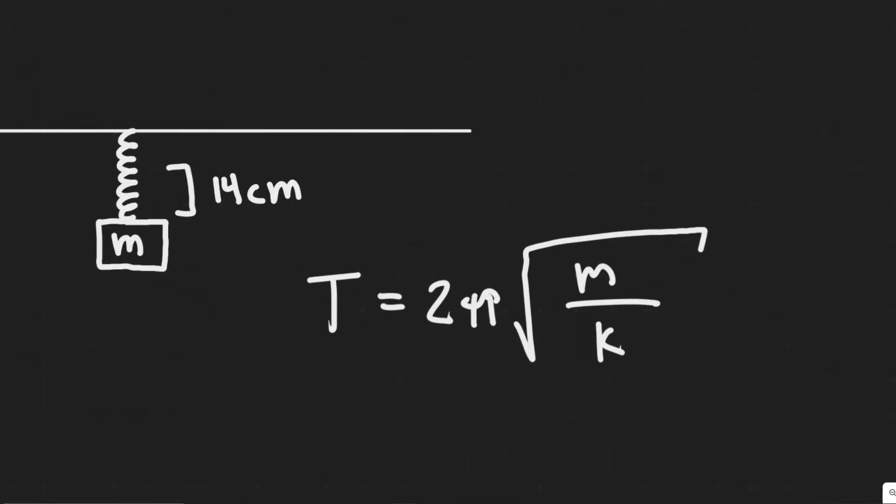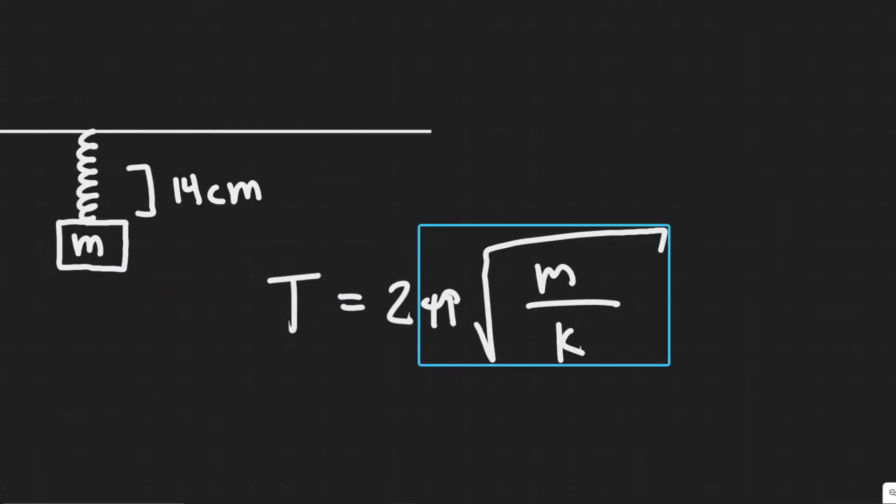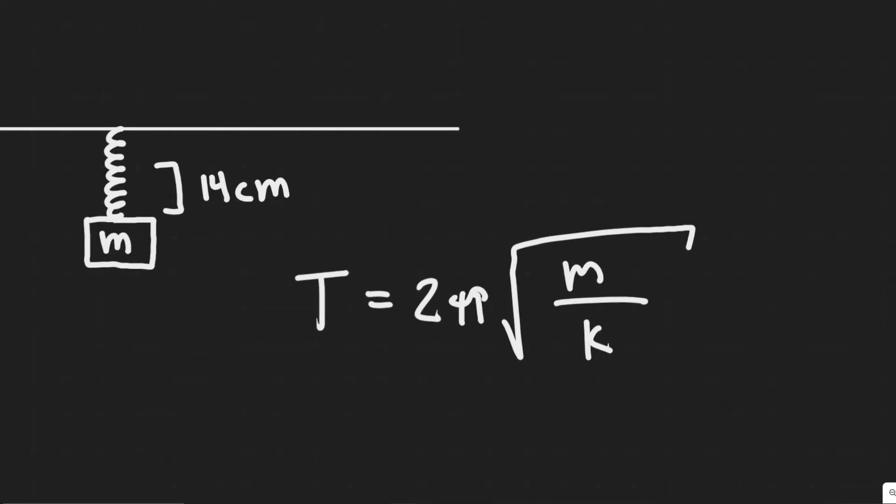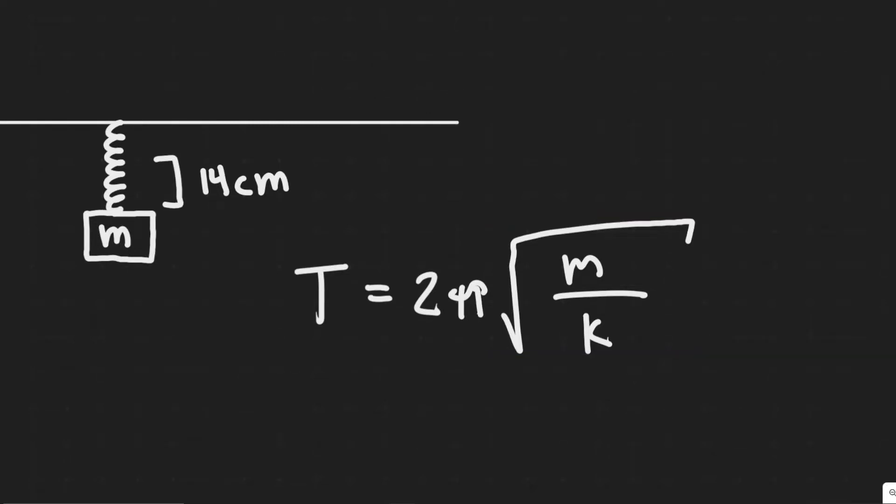So we want to solve for the period, so we're going to need to know k and m. Keep in mind they don't give us m, but the way this works is when we solve this, these are going to cancel out, leaving us the ability to solve it.